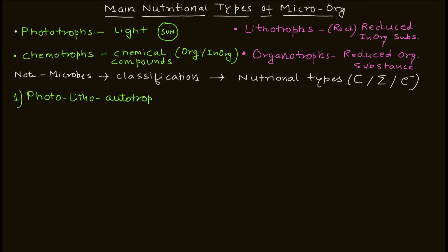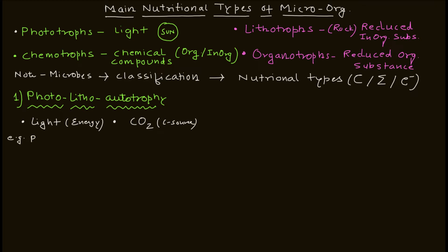Category one is photolitho autotrophy, where you have light as the energy source and CO₂ as the carbon source. Examples for this category are the purple and green sulfur bacteria, as well as cyanobacteria.